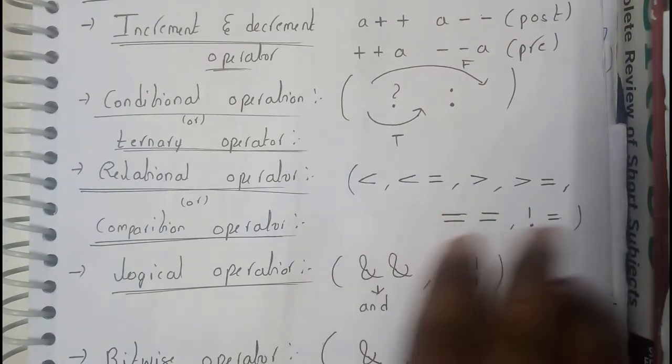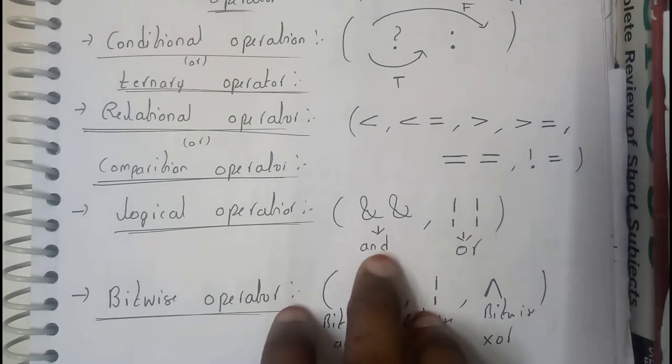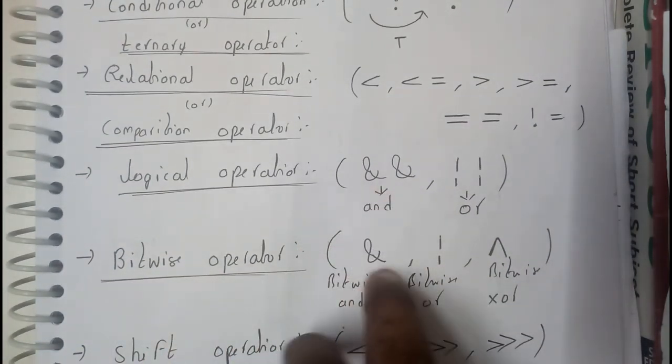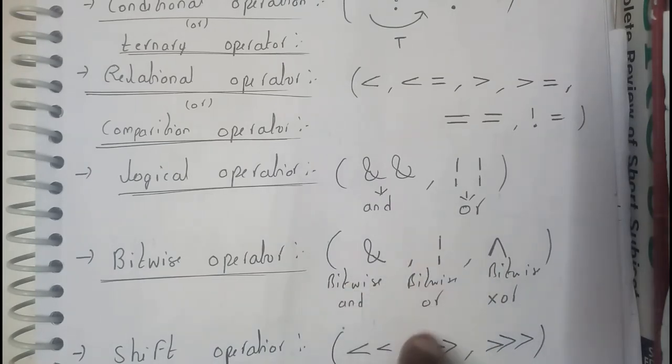Logical operators are nothing but AND operation and OR operation. Bitwise operations are nothing but we will be using only single AND, that is bitwise AND, single OR, bitwise OR, and caret, which is nothing but bitwise XOR.